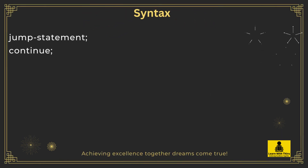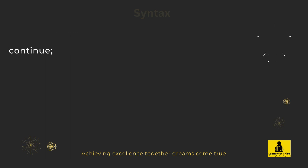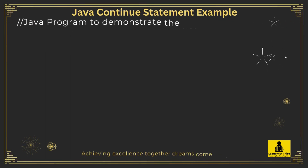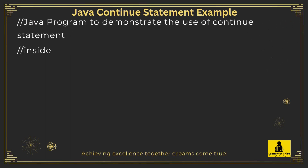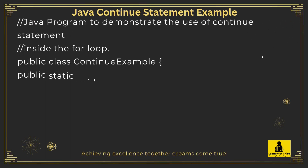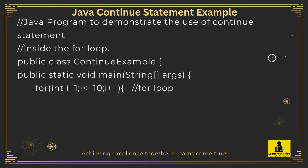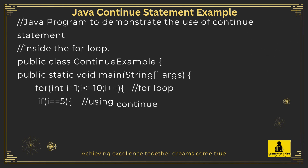Syntax: Jump Statement — Continue. Java Continue Statement: Java program to demonstrate the use of the Continue Statement inside the for loop.